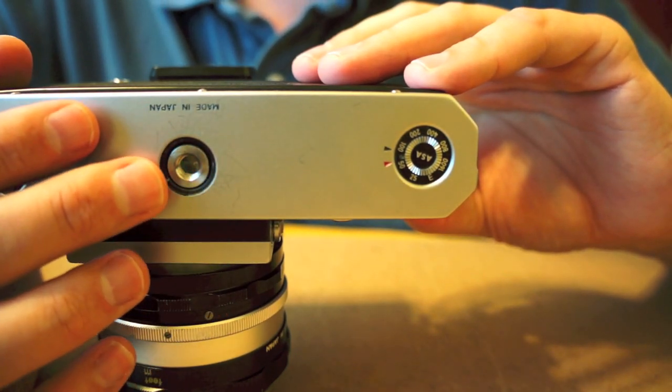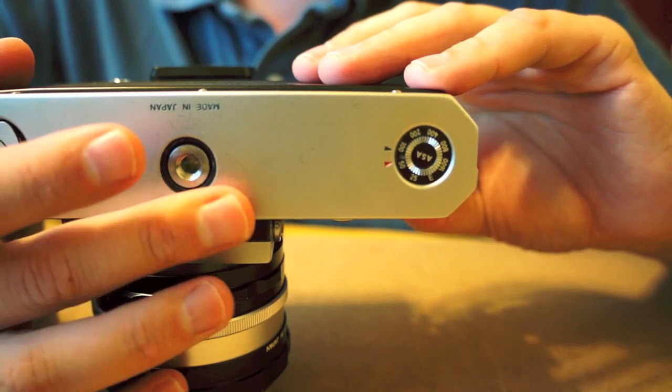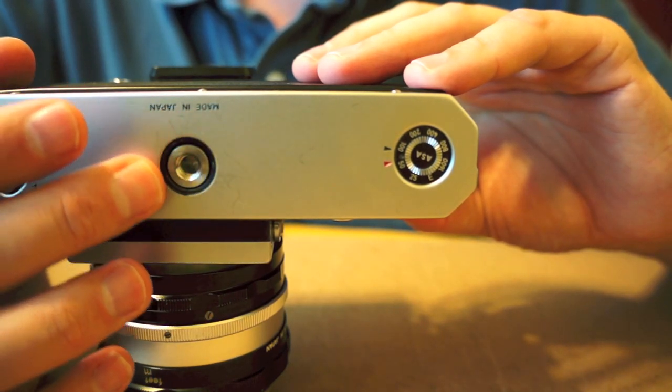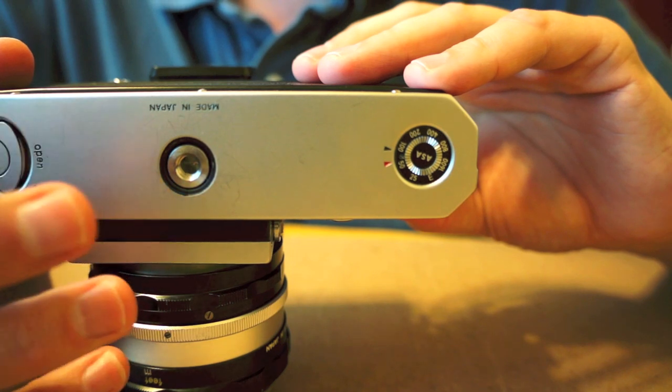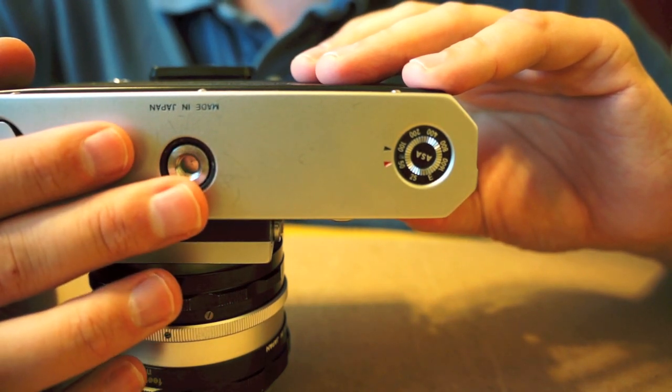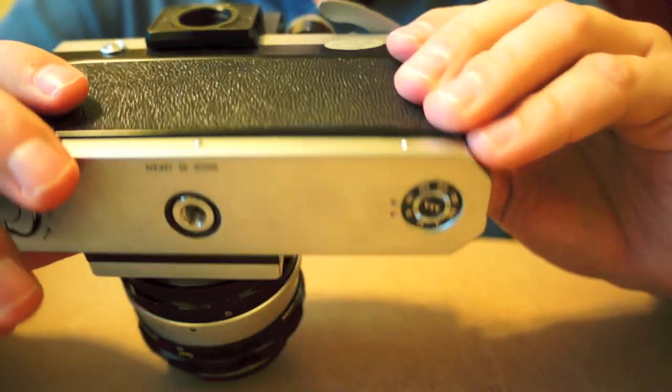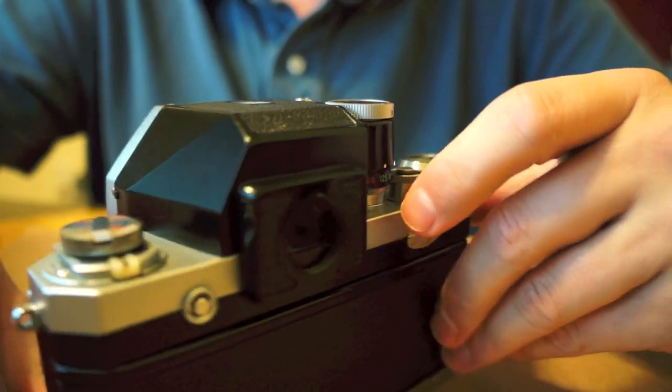So this is where you would mount it on a tripod. This is pretty much the same with cameras nowadays. The exact same thread and everything. So you don't have to worry about that. If you have a tripod for a newer camera, it will still work on this old one.